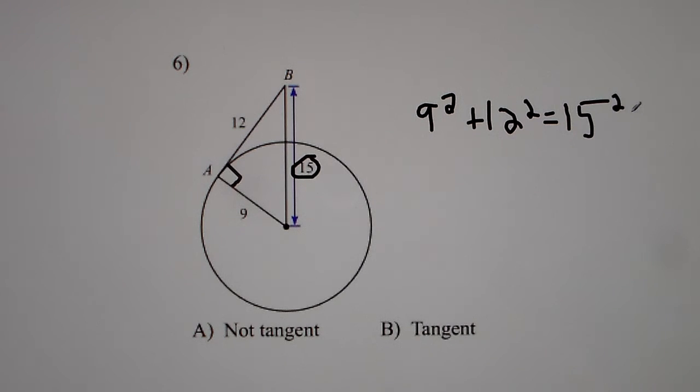And we test that by putting that in the calculator. So 9 squared plus 12 squared gets you 225. 15 squared is 225. So it's tangent for number 6.